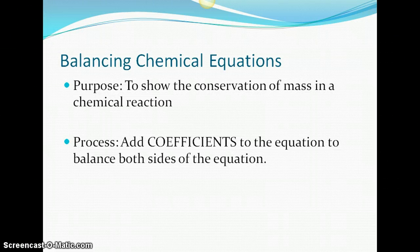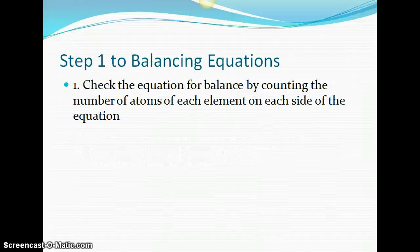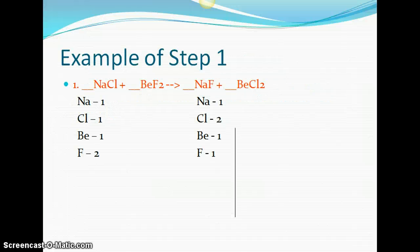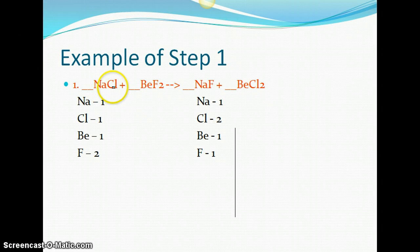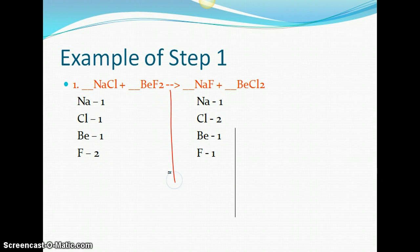So step one to balancing equations is to check the equation for balance by counting how many atoms you have of each element on each side of the equation. So we'll show you that here. We have NaCl, sodium chloride, you don't even have to know what the things are, BeF2, NaF, and BeCl2. So this is how we're going to set up our equation to look at how many of each thing we have on each side of the equation.